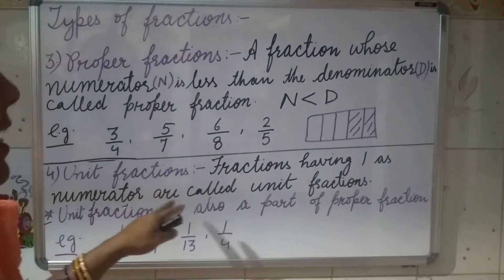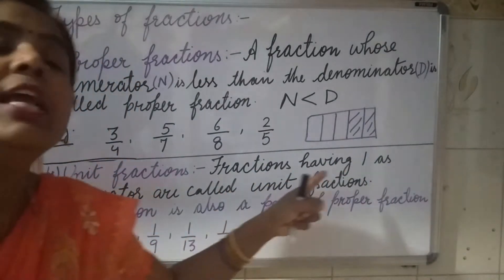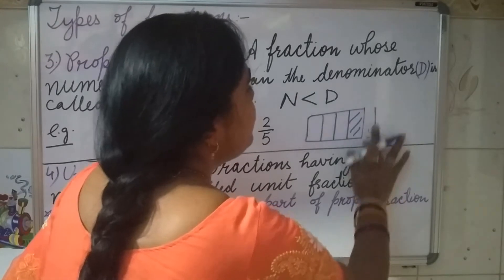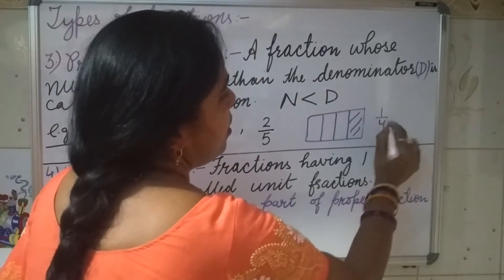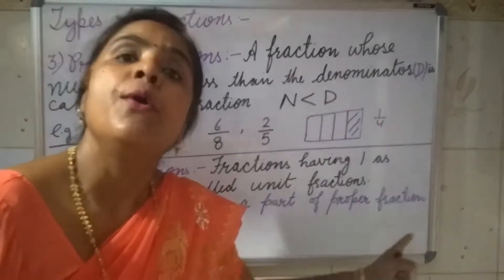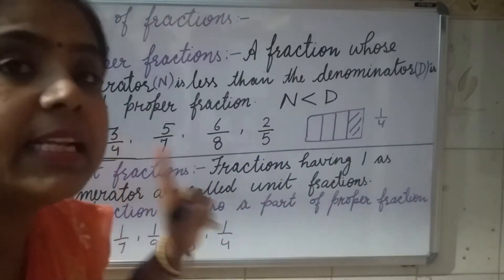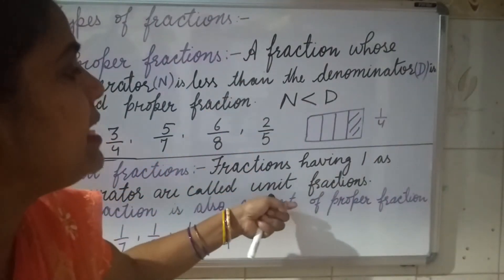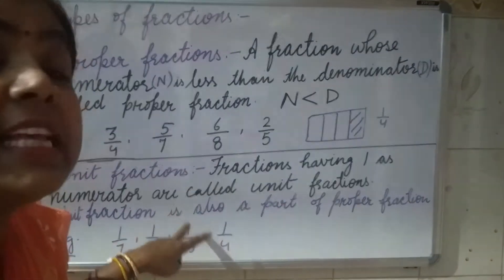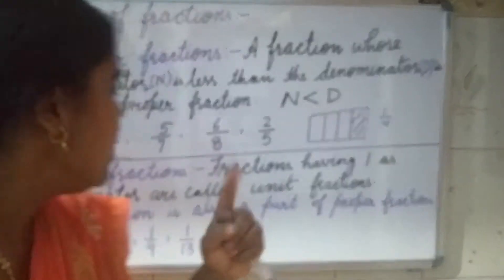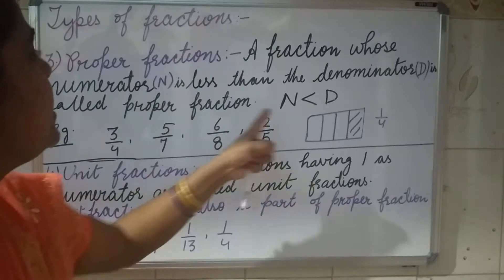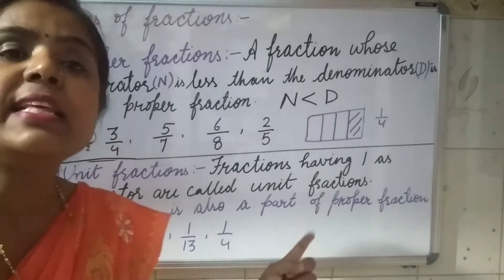The next is unit fraction. Fractions having 1 as numerator are called unit fractions. Unit fraction is always a proper fraction, because if it is 1/4 the numerator is smaller than the denominator. So unit fraction is also a part of proper fraction. The difference between proper fraction and unit fraction: in a proper fraction the numerator can be any number — 2, 3, 4, 5, 7, 9. But in unit fraction the numerator is always 1. So proper fraction: numerator is less than denominator; unit fraction: numerator is always 1.